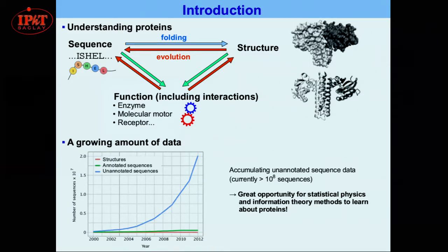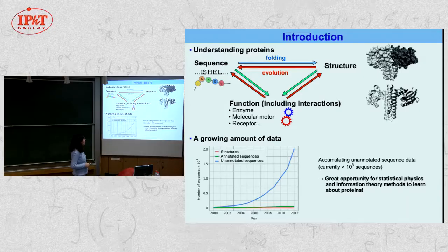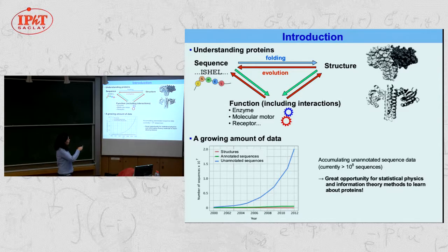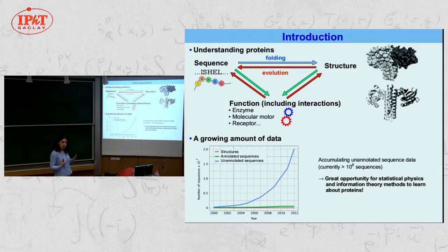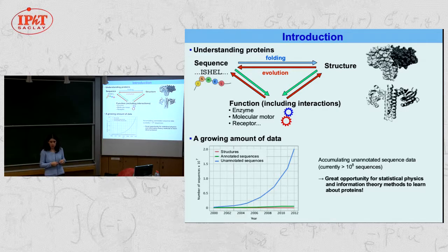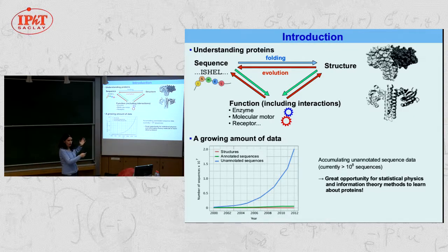Proteins can be described at several different levels. Fundamentally, they are heteropolymers of amino acids, fully determined by the sequence of amino acids they are constituted with. This sequence fully defines their 3D structure and their function — their biological role in the cell. However, something perhaps less frequently mentioned is that the structure and function in turn impose constraints on the sequences that can exist and survive natural selection, because mutations affect directly the sequence, but what matters is the function. Mutations are selected based on their impact on structure and function.